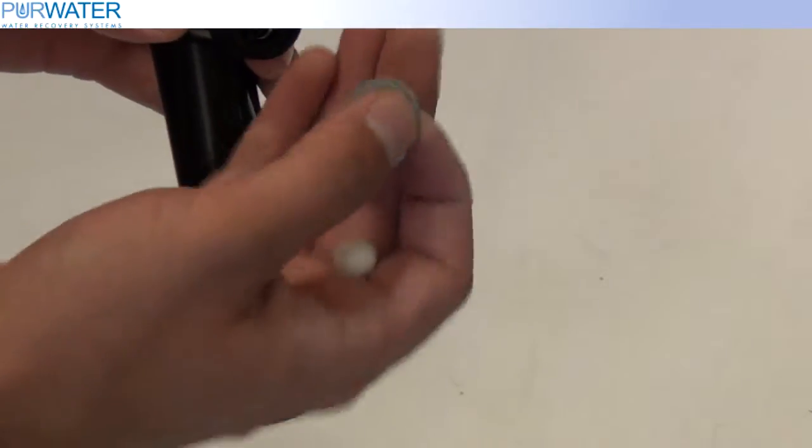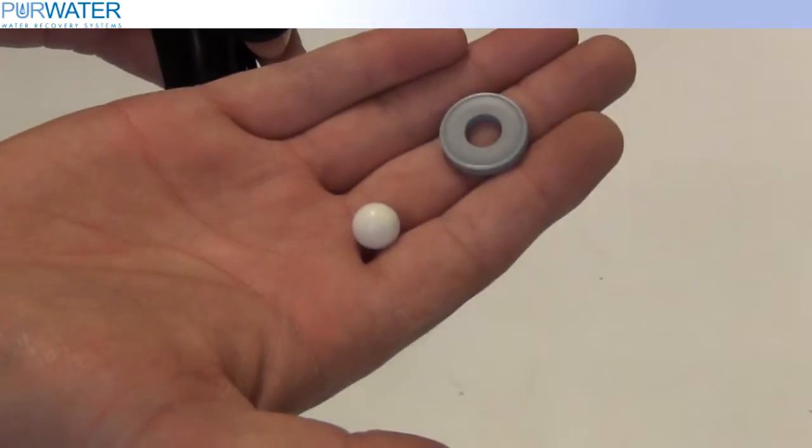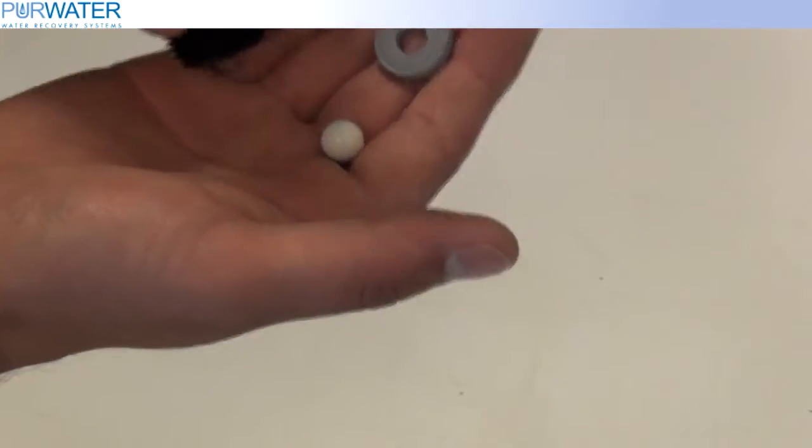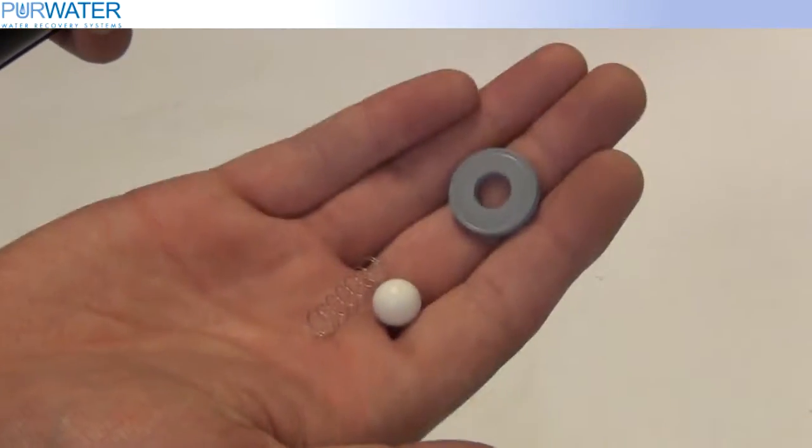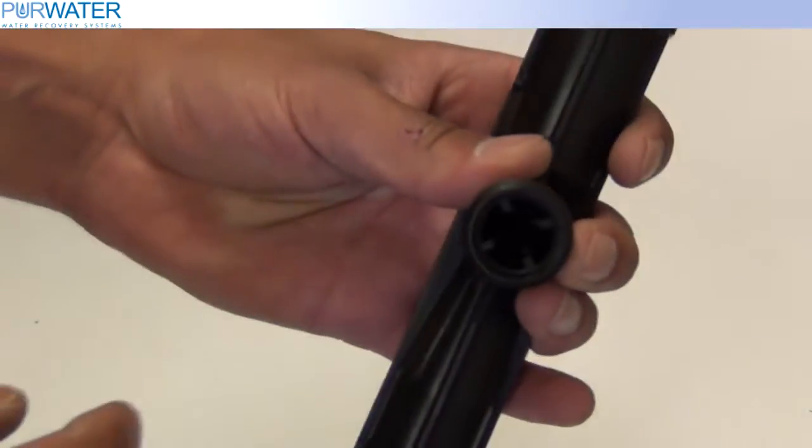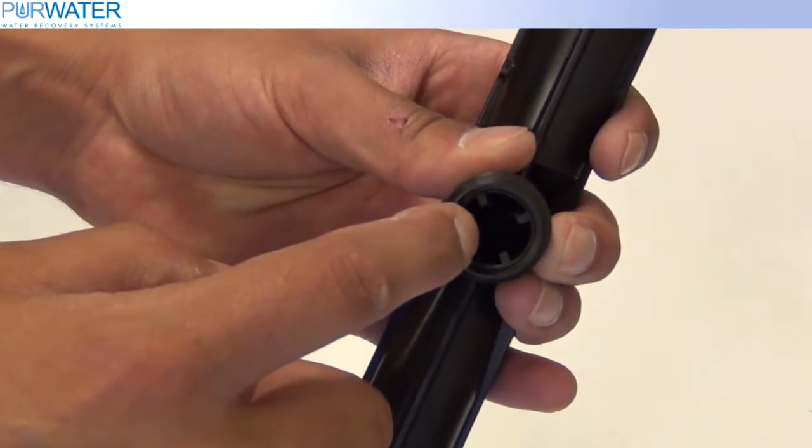Inside, there is a gasket, ball, and a spring. Inspect this area to make sure there is no clog as well.